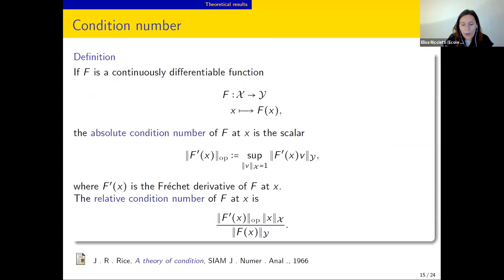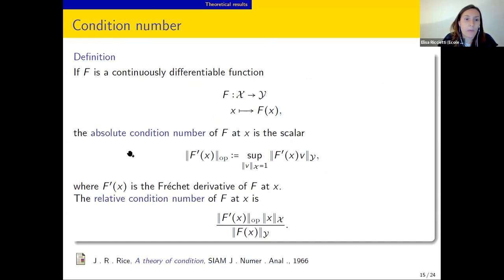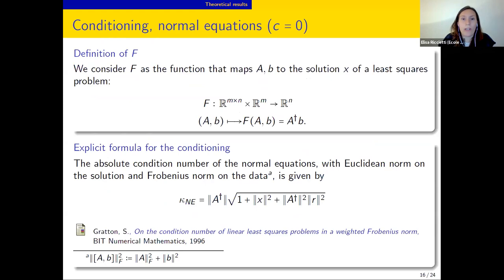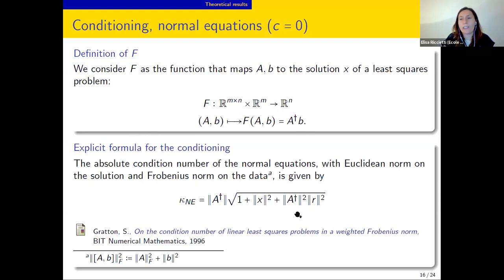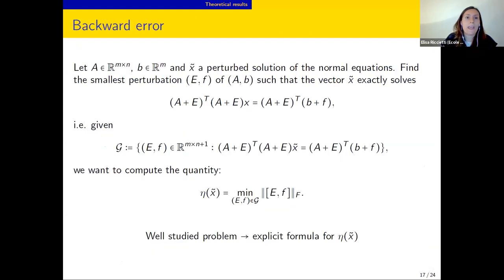For normal equations, the mapping F maps the data A and B to the least squares solution. We can find an explicit formula for the condition number, and the structured analysis recovers the known results for least squares problems. For the backward error, the problem is to find the smallest perturbations E and F on A and B such that the perturbed solution solves a nearby problem. An explicit, computable formula for this backward error is known.